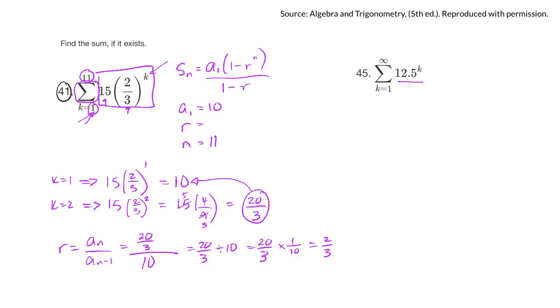So now I have all the information I need to plug into my formula. Sₙ equals first term, 10, times (1 - (2/3)¹¹)/(1 - 2/3), where n is 11.